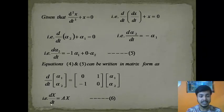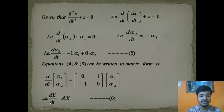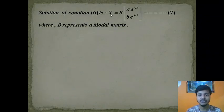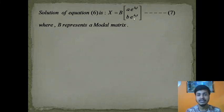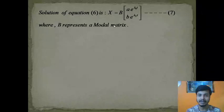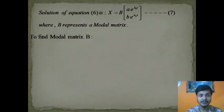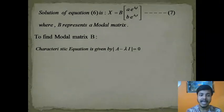To get the desired solution we need to solve equation 6. This equation can be solved by separating variables — dX/X and A·dt — and integrating, to get the solution: X = B · [e^(λ₁t), e^(λ₂t)], where B represents the modal matrix. To find the modal matrix we need to find eigenvalues and then eigenvectors.